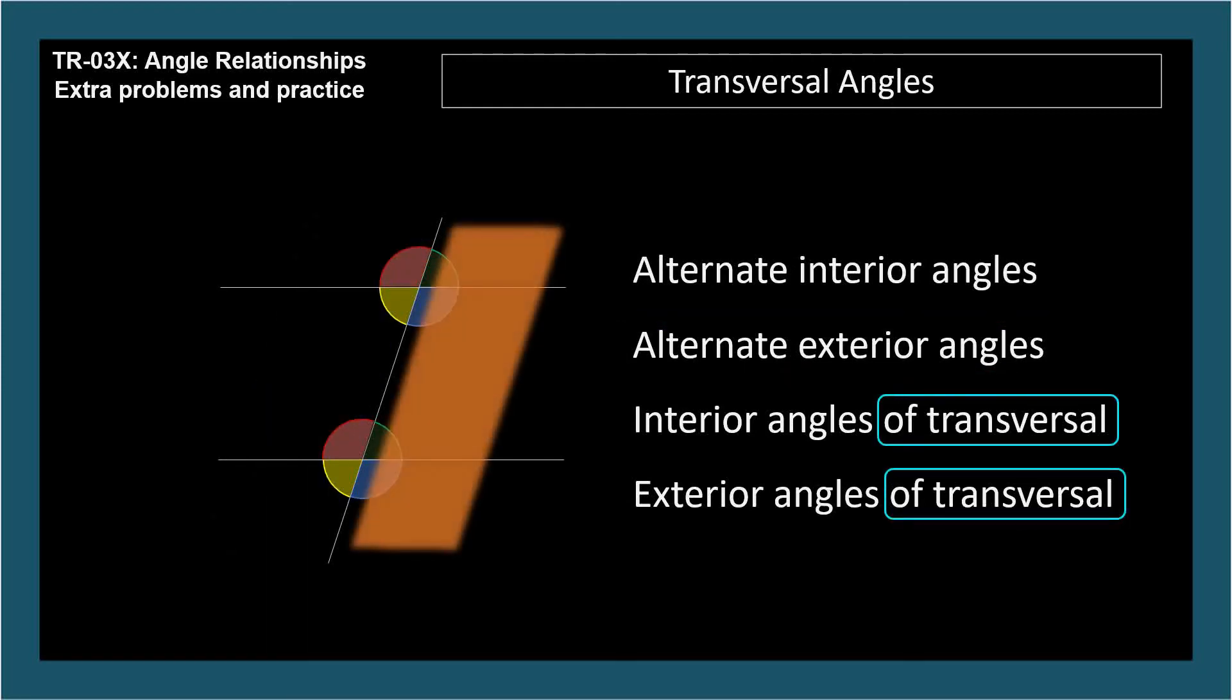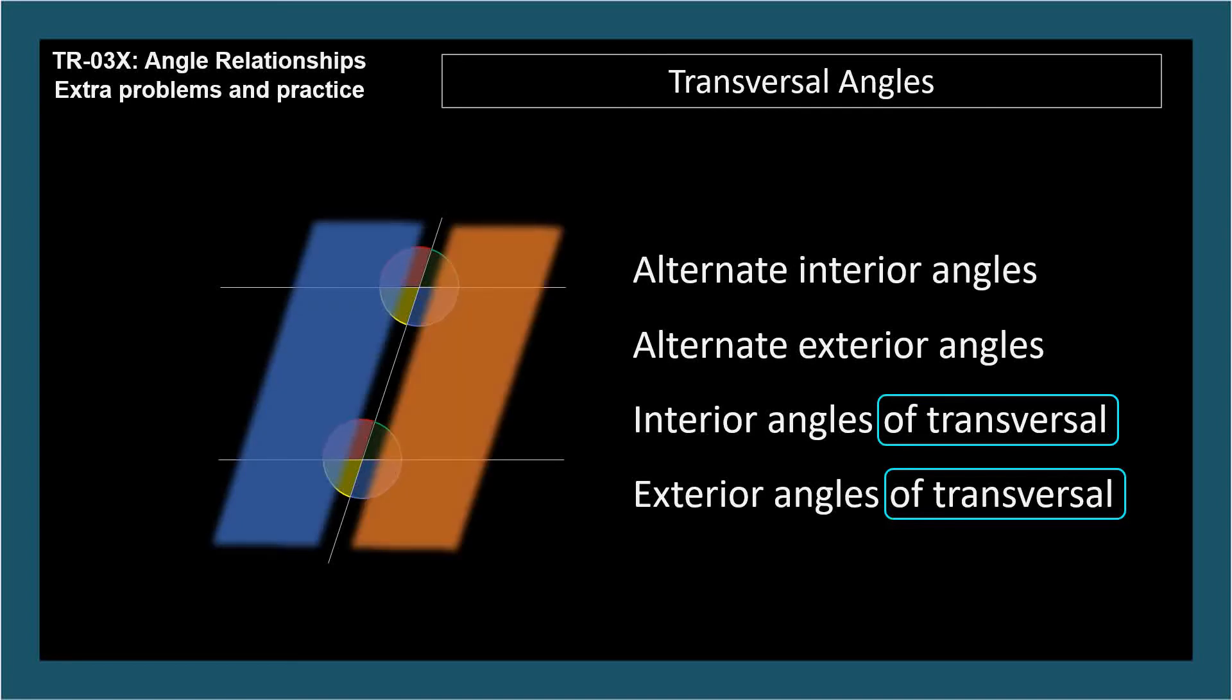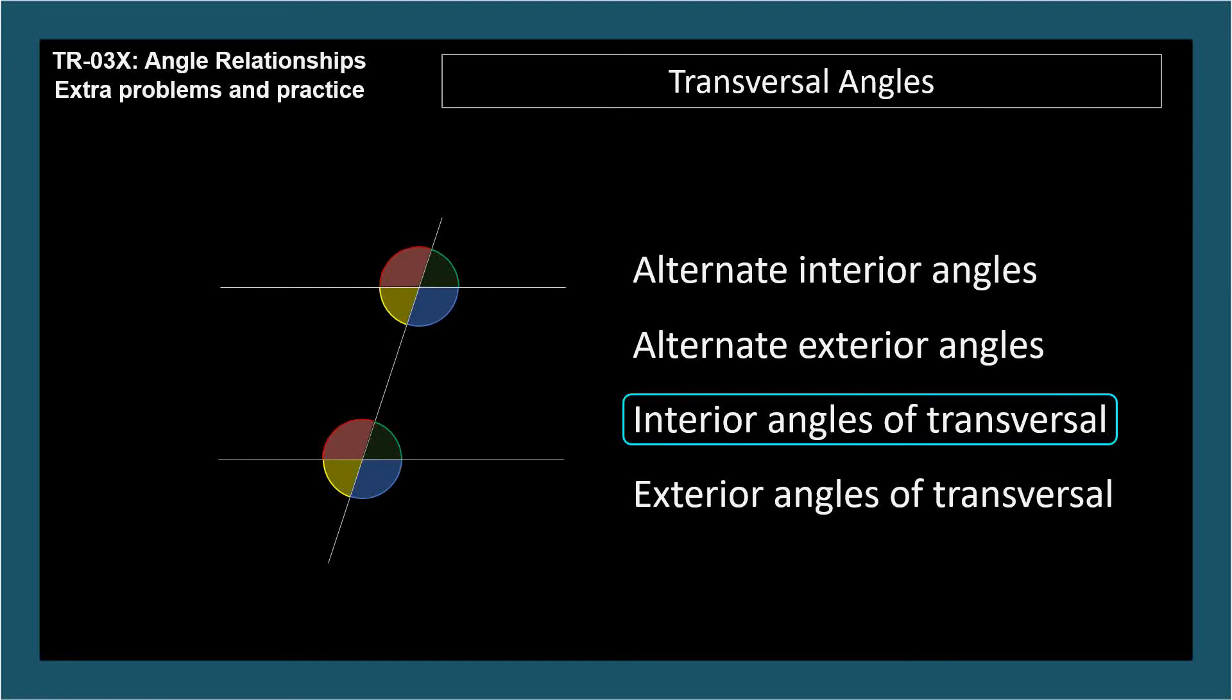Of transversal, or of the transversal, means the angles are on the same side, not the opposite side, of the transversal. These are interior angles of transversal. They are between the parallel lines and on the same side of the transversal. These are also interior angles of transversal. These pairs of angles are always supplementary.